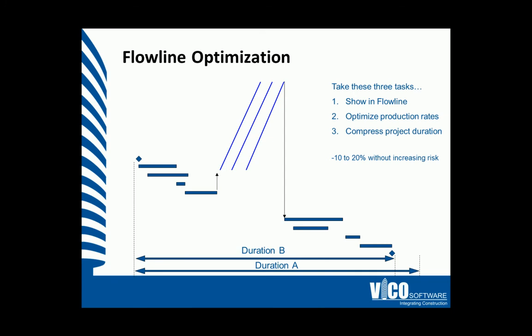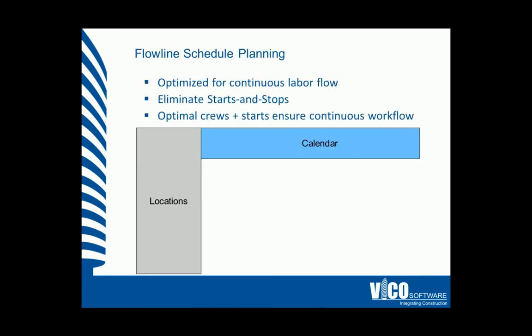Let's look at another example. The aim of flow line optimization is to plan for continuous workflow, eliminate starts and stops, and develop optimal crew sizes to ensure the continuous workflow remains constant.